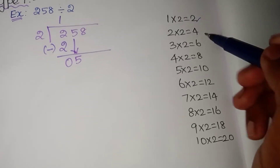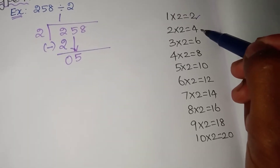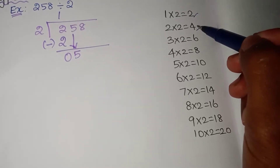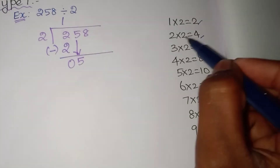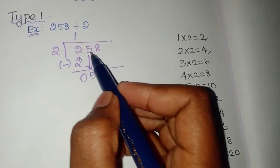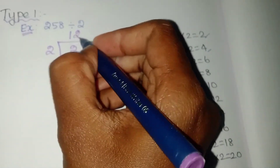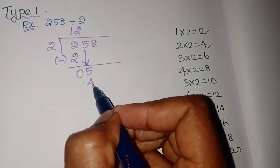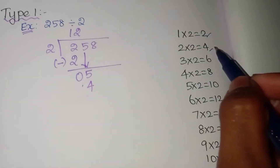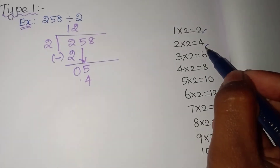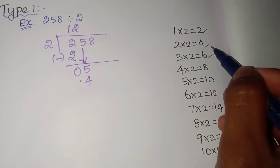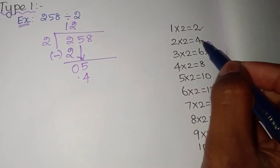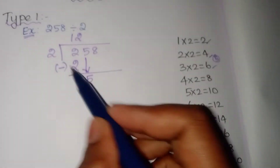5 will not come in the second table. So since 5 is not there, you have to look at the number just before 5. The number smaller than 5 in the table is 4. So how many 2s are 4? 2 into 2 is 4. Since 5 is not directly in the table, you write the smaller number — 2 into 2 is 4, so you can write 2 here.